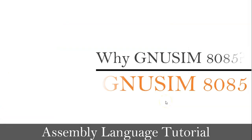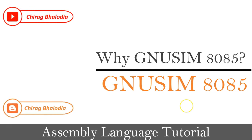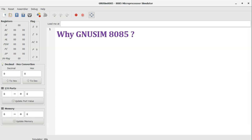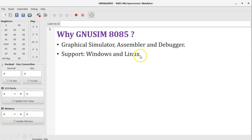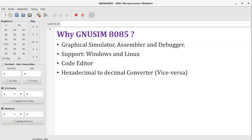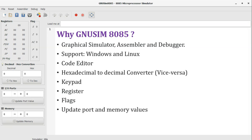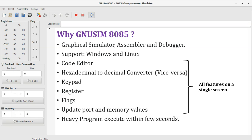The final topic is why GNU SIM 8085 over other simulators. GNU SIM provides a graphical simulator, assembler, and debugger. It supports Windows and Linux. Features include a code editor, hexadecimal-to-decimal converter and vice versa, keypad, registers display, flags, update port and memory values — all on a single screen. Additionally, heavy programs execute within a few seconds. These are the reasons GNU SIM 8085 is better than other simulators.